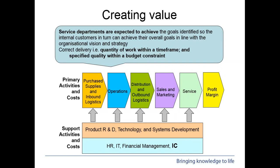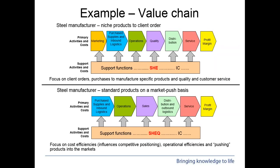Looking further at creating value, I'm using a value chain approach to show value creation in a business. Service departments are focused on trying to achieve goals. The value chain is split between a business's primary activities and support activities — primary activities are those that create value for a customer. Here we have an example of a steel manufacturer. The first provides niche products based on client orders — they operate on a pull basis, waiting for a customer order and then manufacturing specifically to that order. The second steel manufacturer produces standard products that it pushes into the market — a pull versus a push.